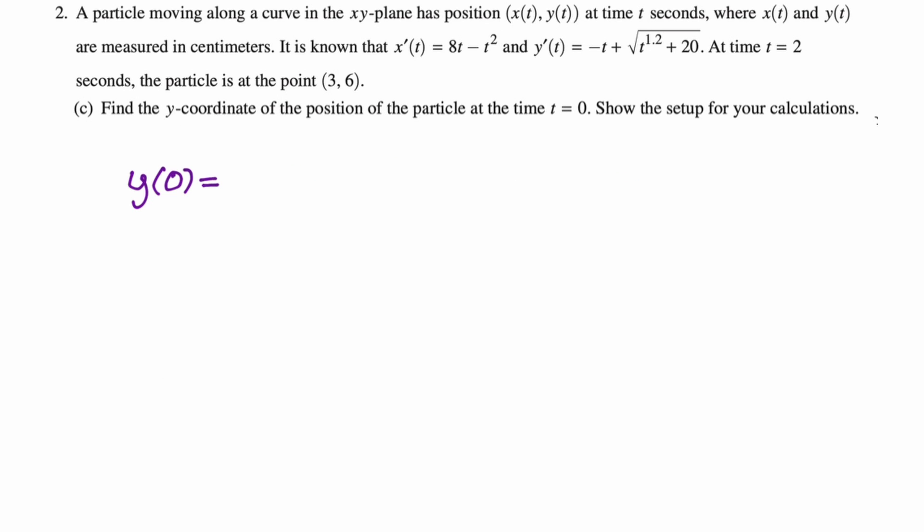Part (c): Find the y-coordinate of the position of the particle at time t = 0. Show the setup for your calculations. You've got to be really careful with this because what you are given is position at t = 2. We know at t = 2, the particle is at (3, 6), so the y-coordinate is 6. What we're going to do is say that y(0) is where we are at 2 minus the displacement from 0 to 2 of the y-coordinate. So it's minus the integral from 0 to 2 of y'(t) dt. It's my favorite way to rearrange the fundamental theorem. If you're not sure what's happening, just think: the integral from 0 to 2 of y' should be y(2) - y(0). Rearrange it so you're solving for y(0).